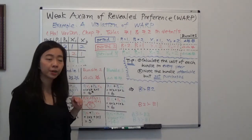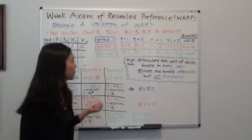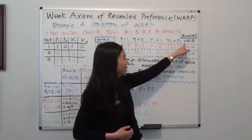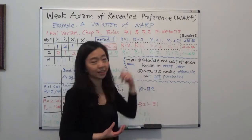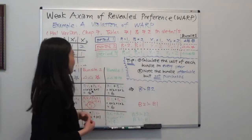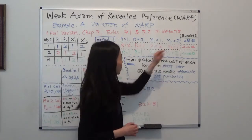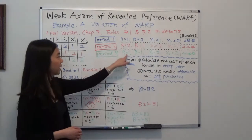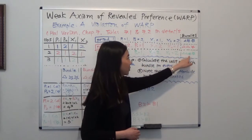In Period 1, the price of Good 1 is 1 and the price of Good 2 is 2, and we can observe the consumption bundle — the consumer purchased 1 unit of Good 1 and 2 units of Good 2. I'm going to treat Good 1 as a triangle and Good 2 as a star to help you visualize how many goods of each the consumer purchased. So in year 1, the consumer purchased 1 triangle and 2 stars. In year 2, the consumer purchased 2 units of Good 1 and 1 unit of Good 2 — that's 2 triangles and 1 star. And in year 3, the consumer purchased 2 units of Good 1 and 2 units of Good 2 — so 2 triangles and 2 stars.